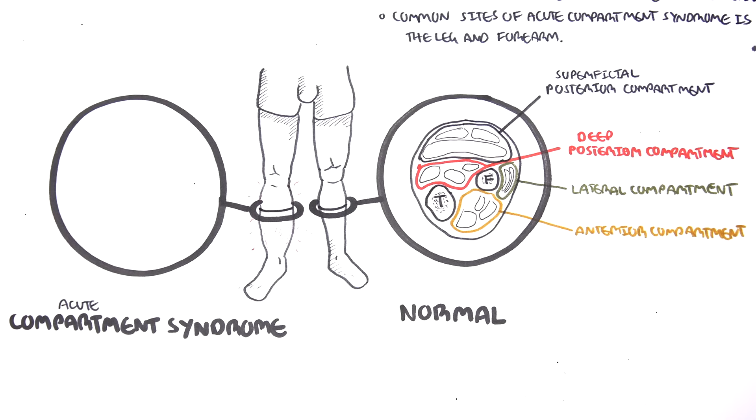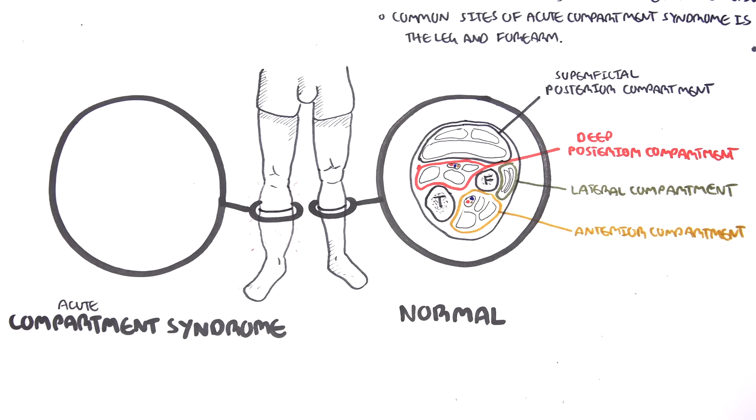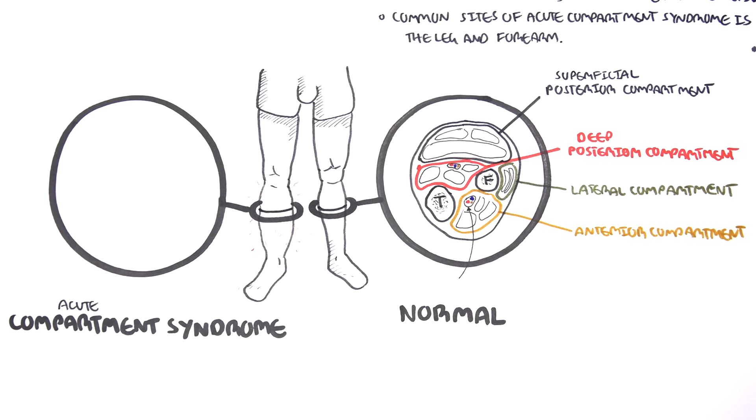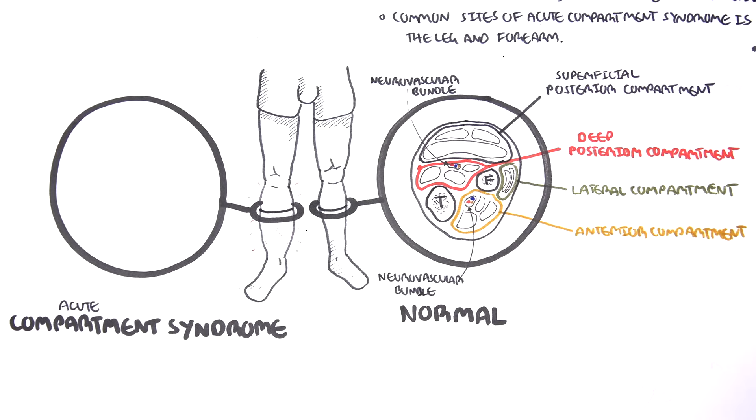In summary, the leg has four compartments, and in each compartment you have muscles that run through them. Within each compartment you also have neurovascular bundles, which include the artery, the vein, and the nerve, so that the muscles can be supplied by them.